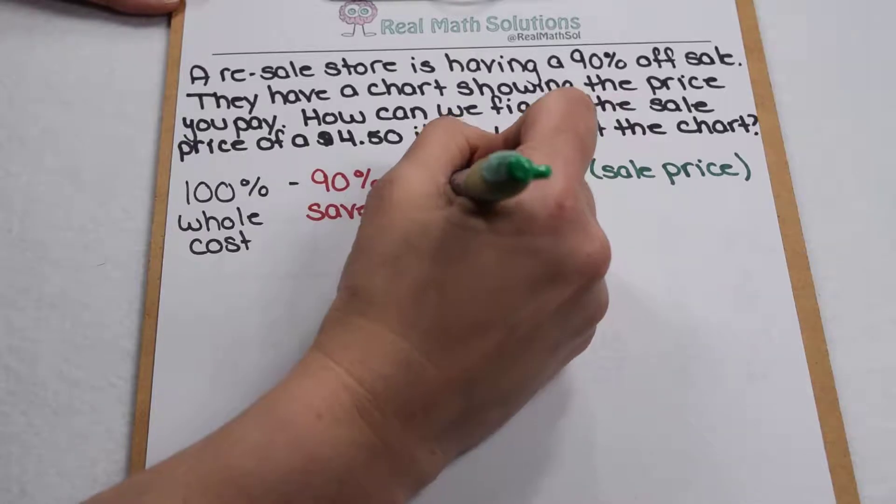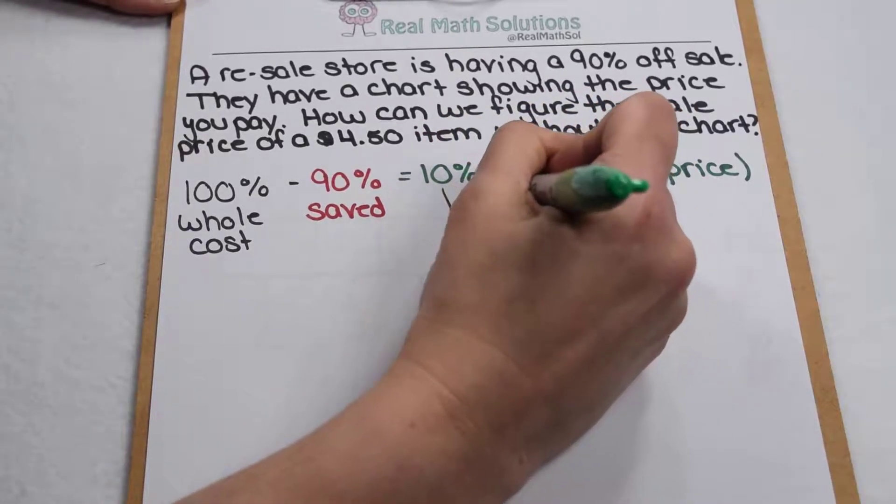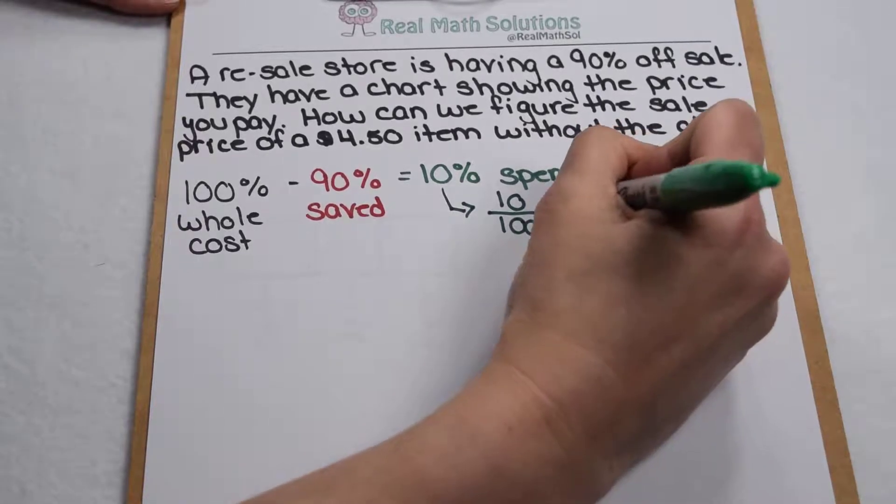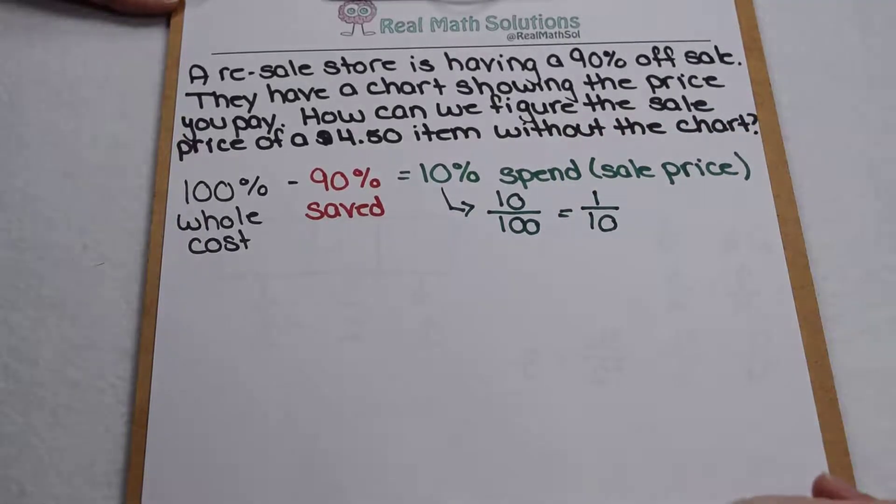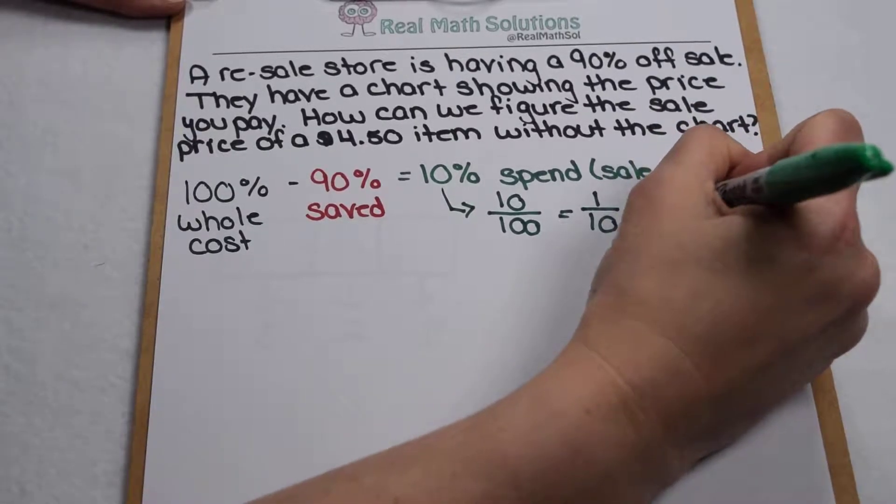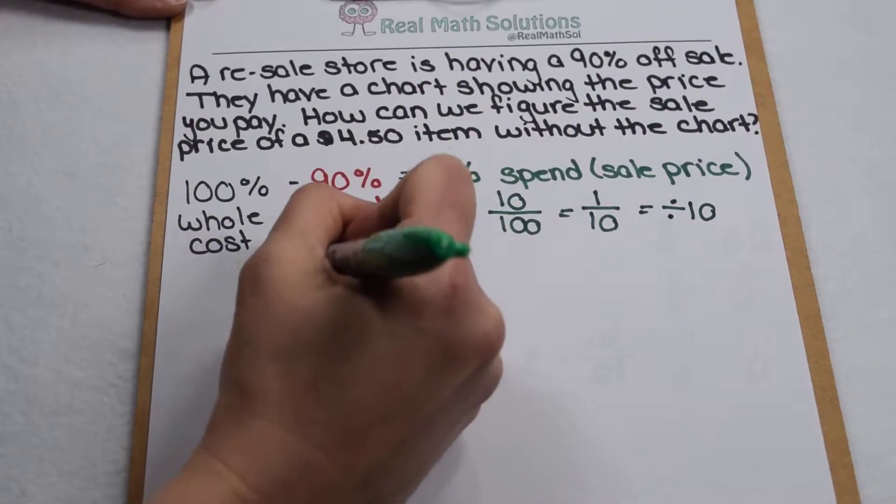Let's think about how we can use 10%. Ten percent means I have 10 out of 100. If I simplify 10 out of 100 that's equivalent to 1 tenth. Finding 1 tenth of an item is the same as dividing it by 10. So that's where we're going to start.